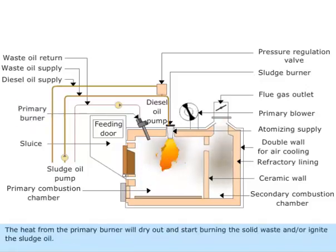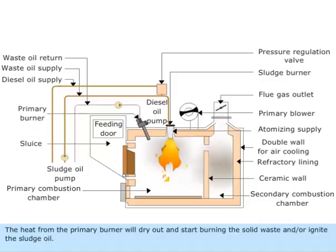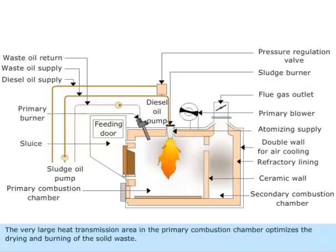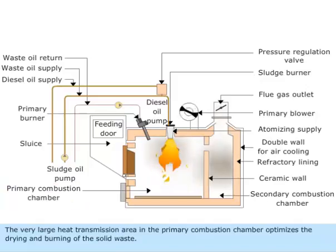The heat from the primary burner will dry out and start burning the solid waste, and or ignite the sludge oil. The very large heat transmission area in the primary combustion chamber optimizes the drying and burning of the solid waste.